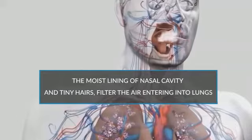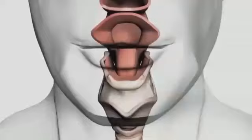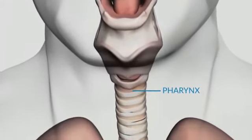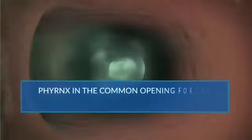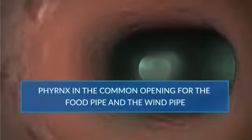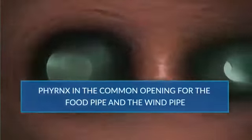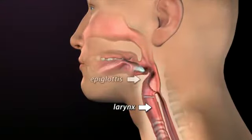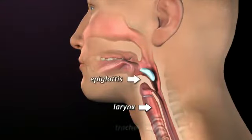From the nasal cavity, air enters into the pharynx. The pharynx is a common opening for food and air. Here, there is a small flap-like structure called the epiglottis, which controls the flow of air and food.